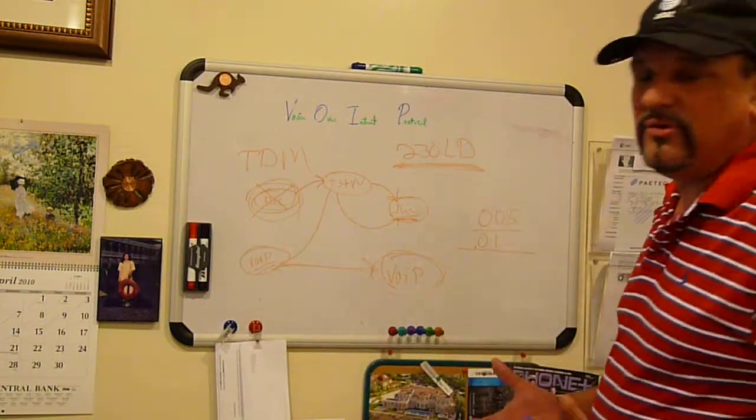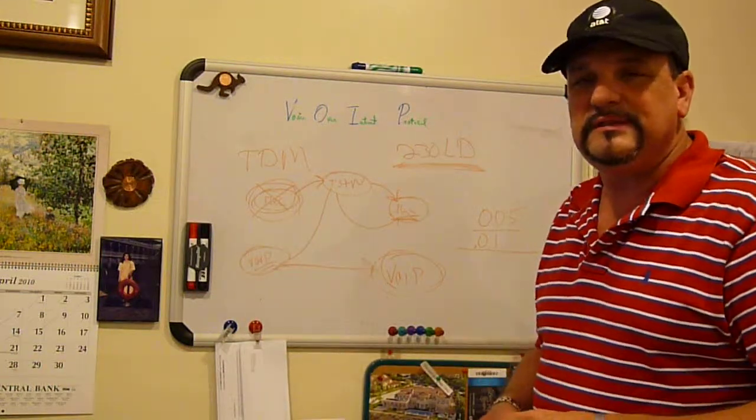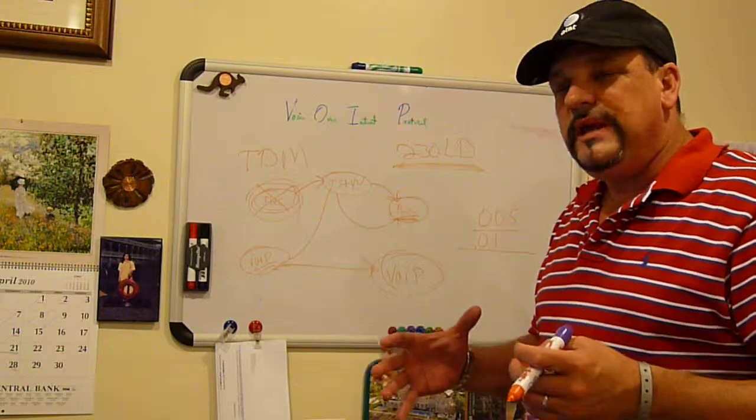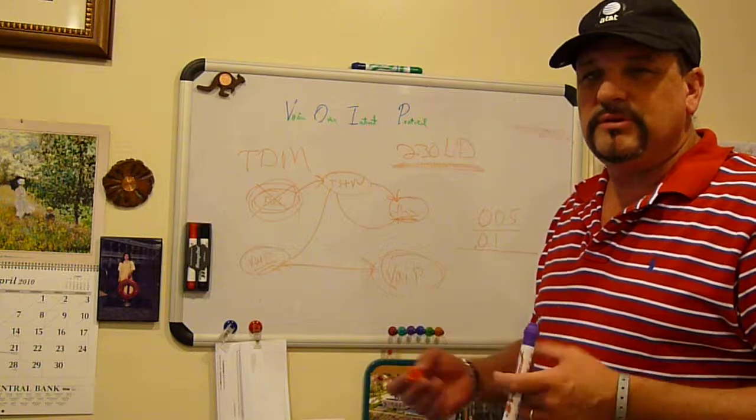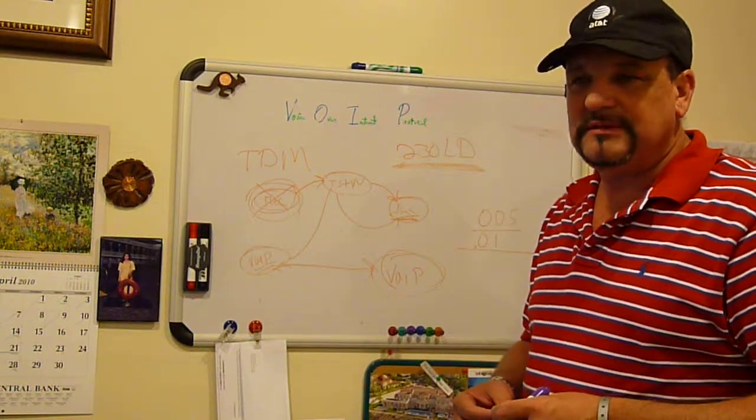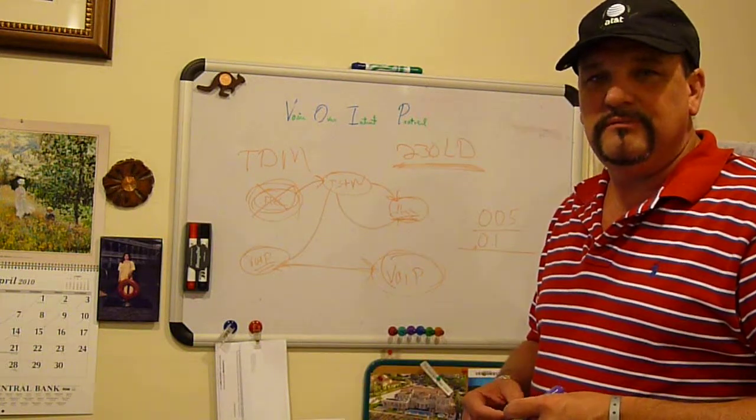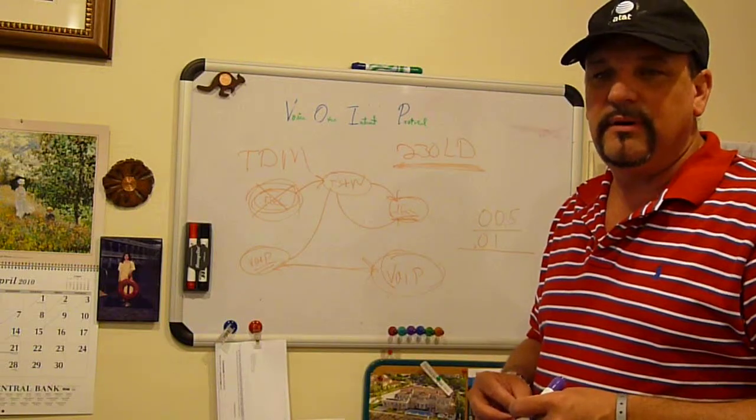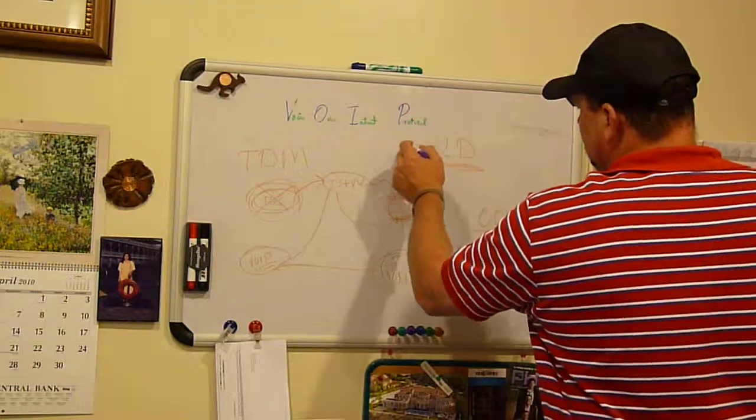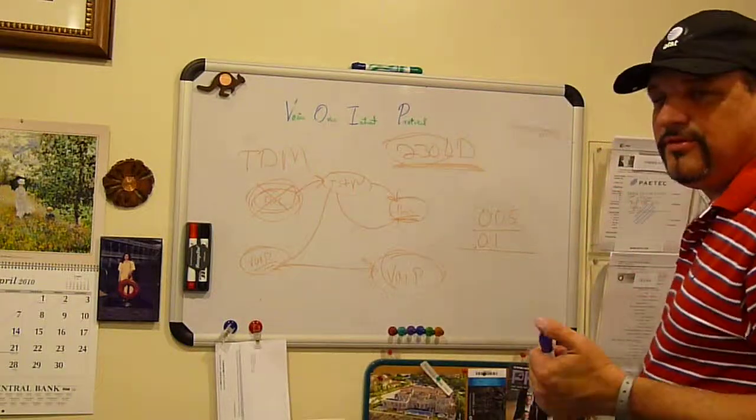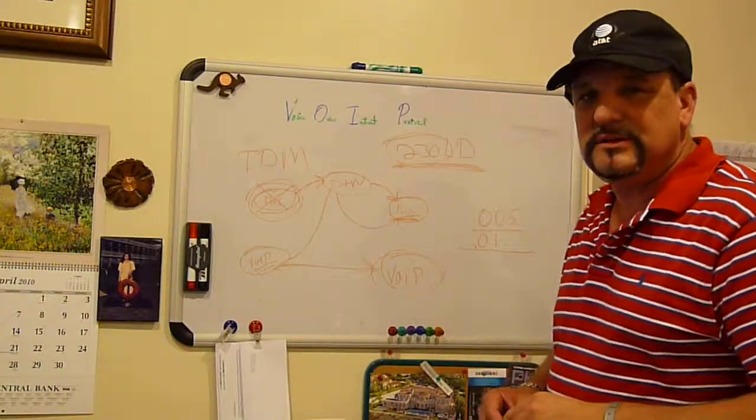So, what the VoIP companies are really betting and what they're really saying is, we can charge X amount of dollars, for example, $25 a month. That seems to be kind of a round baseline number.